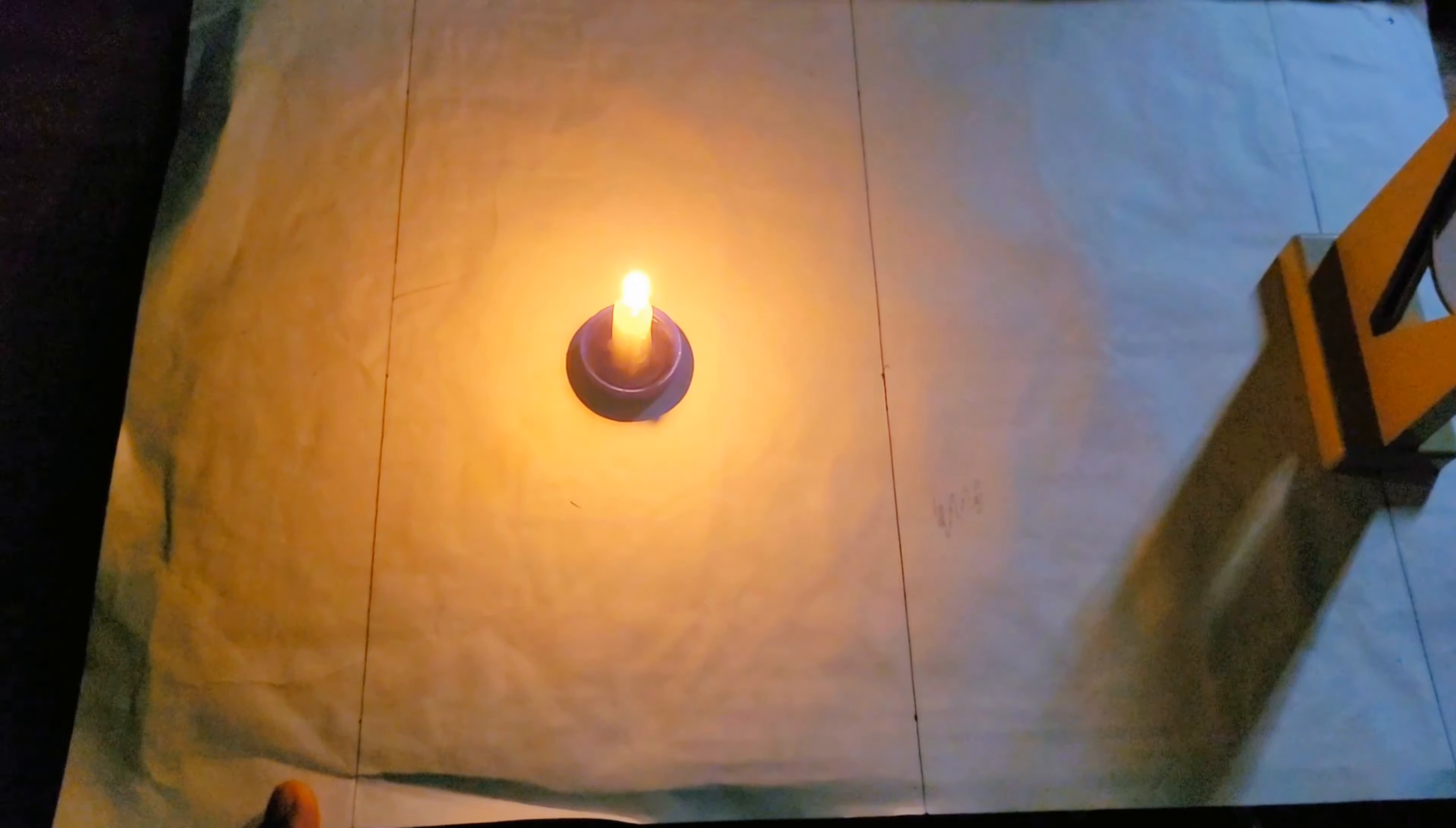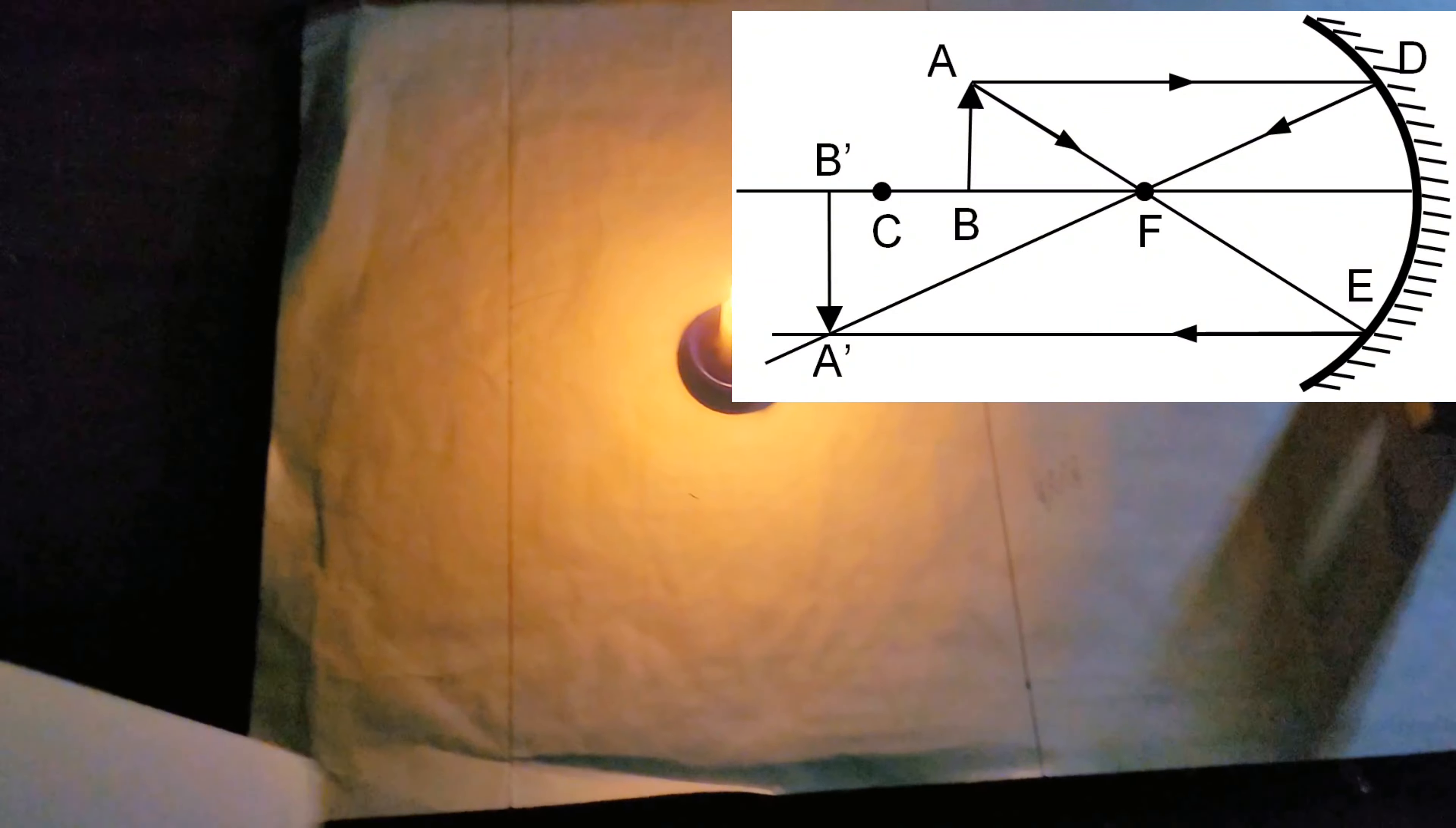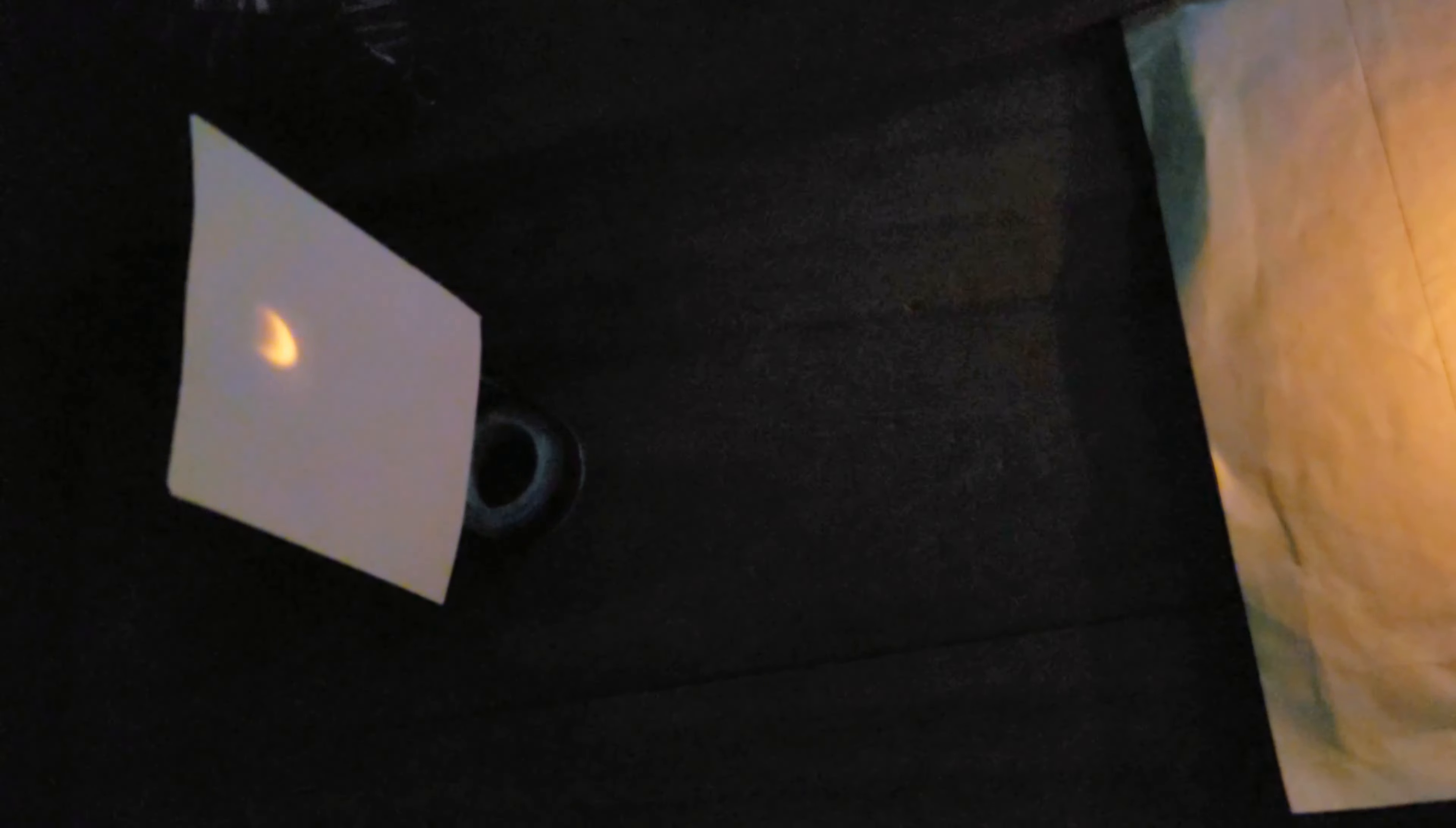Now what are we doing? Our object is between F and C, so according to the theory, the image should form beyond C. So I am placing my screen beyond C. Now here you can see a very clear image, and this image is inverted and the size is enlarged.